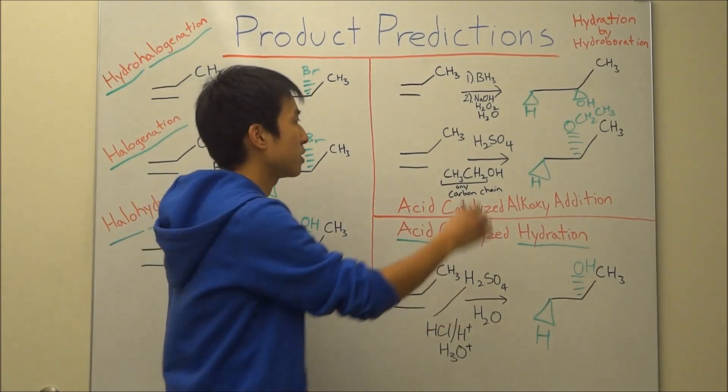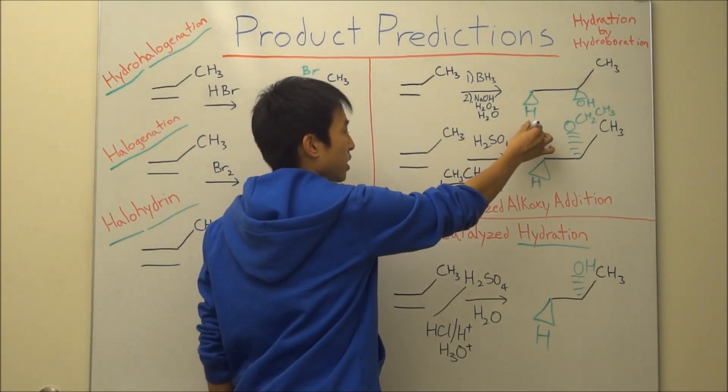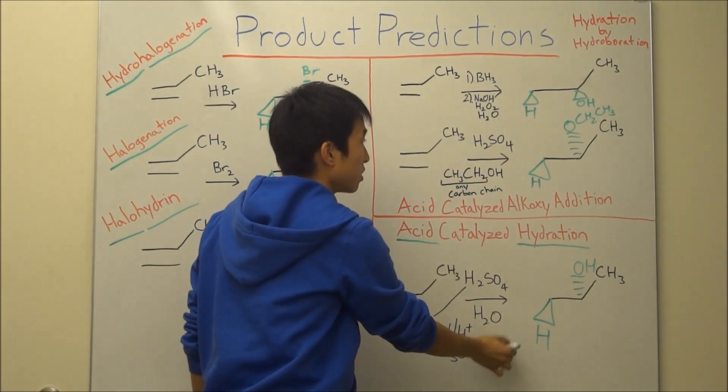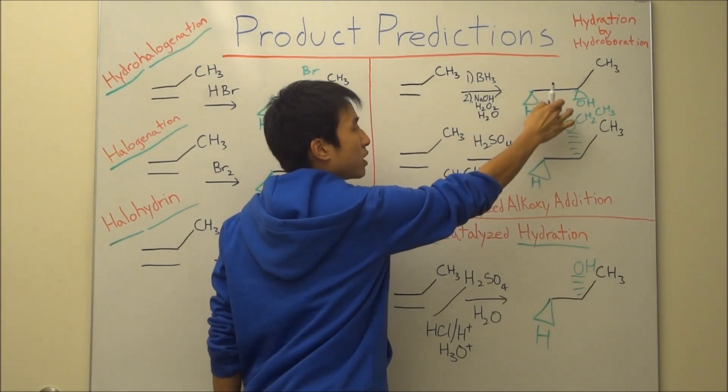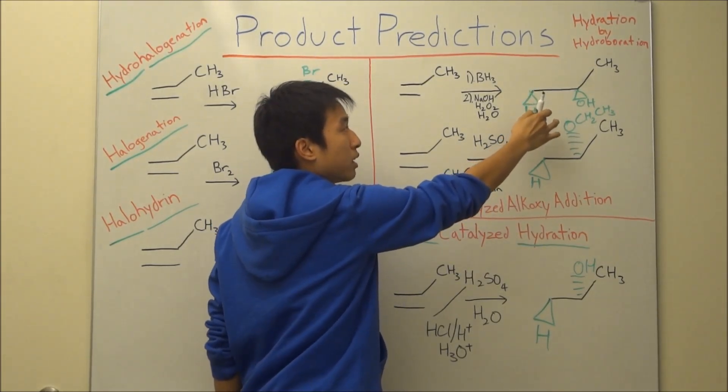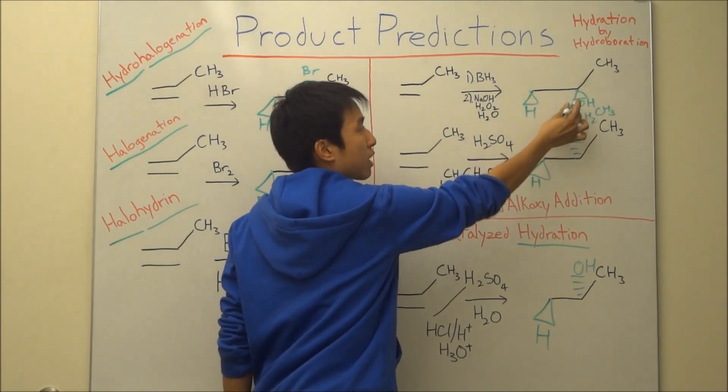And last thing, hydroboration. Once again, the key difference between this one here and acid catalyzed hydration is just that the alcohol group is facing the same side as the H. So this can technically be a dash, and this would be a dash as well.